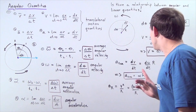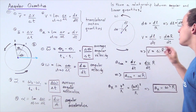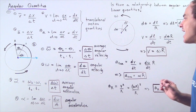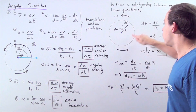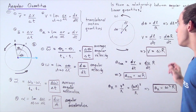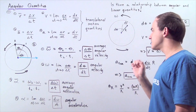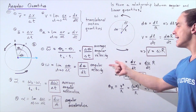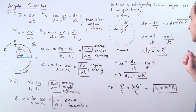Notice that omega remains constant. So at any given point on the rotating object, the instantaneous angular velocity will be exactly the same.